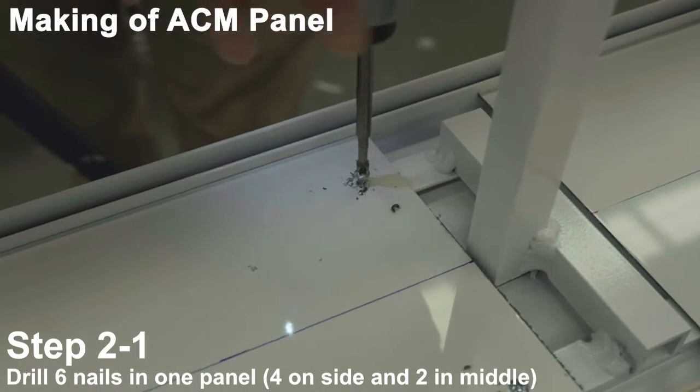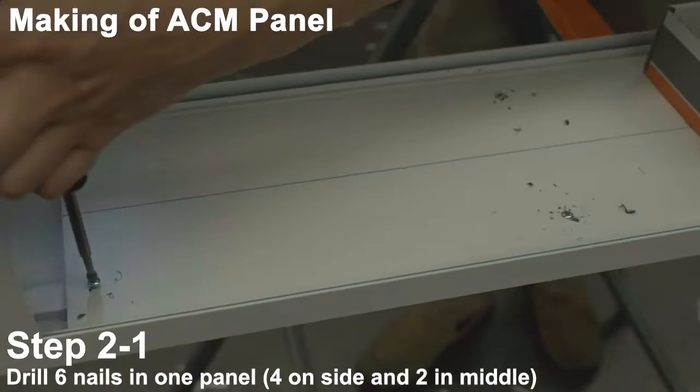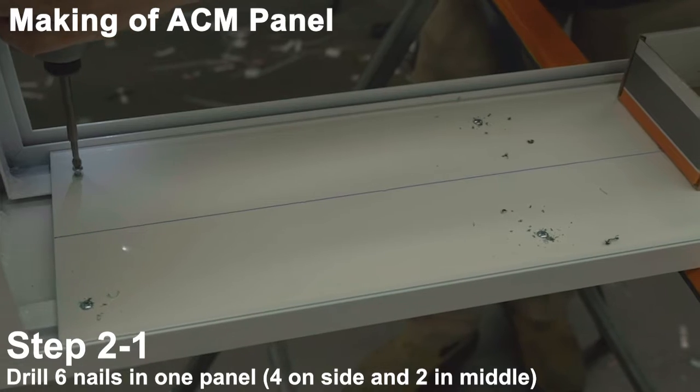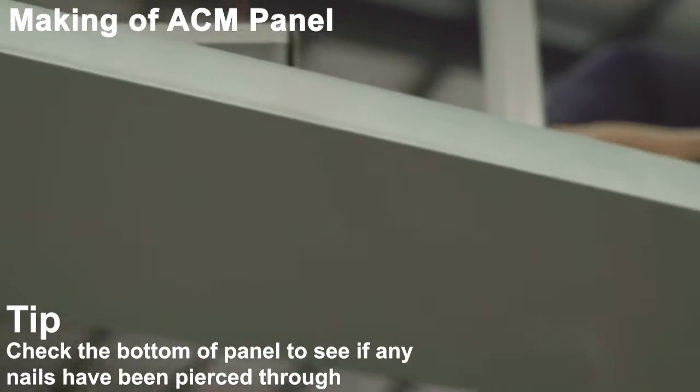Drill 6 nails in one panel, 4 on the sides and 2 in the middle. Check the bottom of the panel to see if any nails have pierced through.